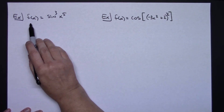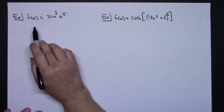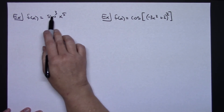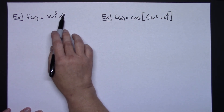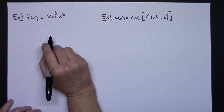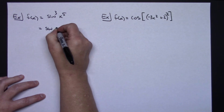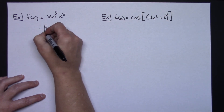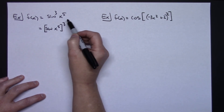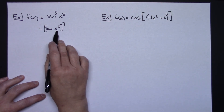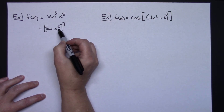Often you'll see functions like f(x) equals sine of x to the fifth, raised to the third power — where the power is written right above the word sine. What I like to tell students is to rewrite this so you can clearly see that the base is sine(x⁵) being raised to the third power. When we do that, the outside function is x to the third and the inside function is sine(x⁵).